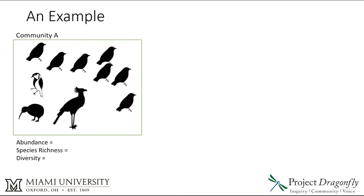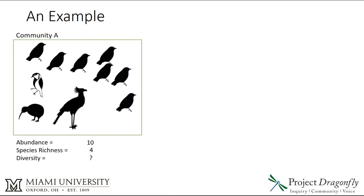Let's look at what that means. Here in Community A, you've got a bunch of bird species, and you can count them all up to find the abundance. If you count them all up, you'll see there are 10 individuals — so that is the abundance. The species richness is four, because you have a kiwi-type species, a chickadee, blackbirds that all seem to be one species, and a secretary bird. The diversity itself we'll leave as a question mark for now.